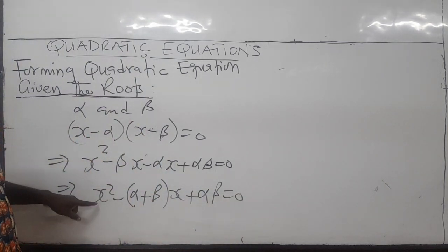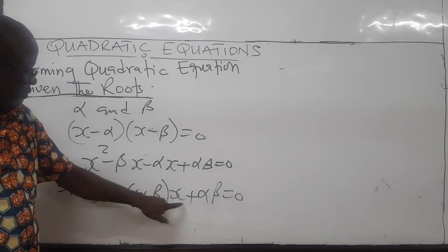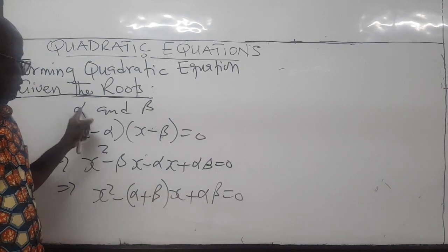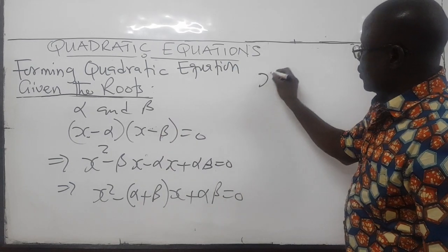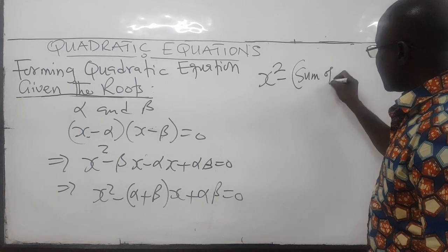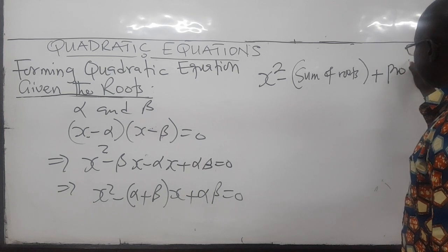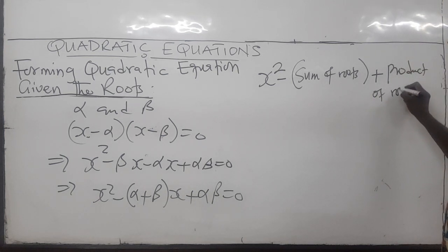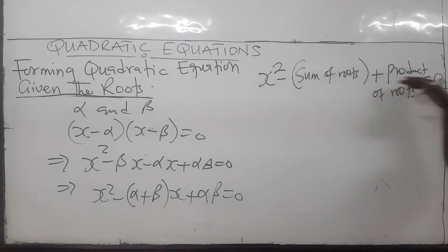Which means X squared minus — factorizing X out — gives alpha plus beta, and then alpha beta is equal to zero. So the quadratic equation is actually X squared minus the sum of the roots times X plus the product of the roots. In general, any new quadratic equation you want to form would be of this form: X squared minus the sum of roots, plus the product of the roots.